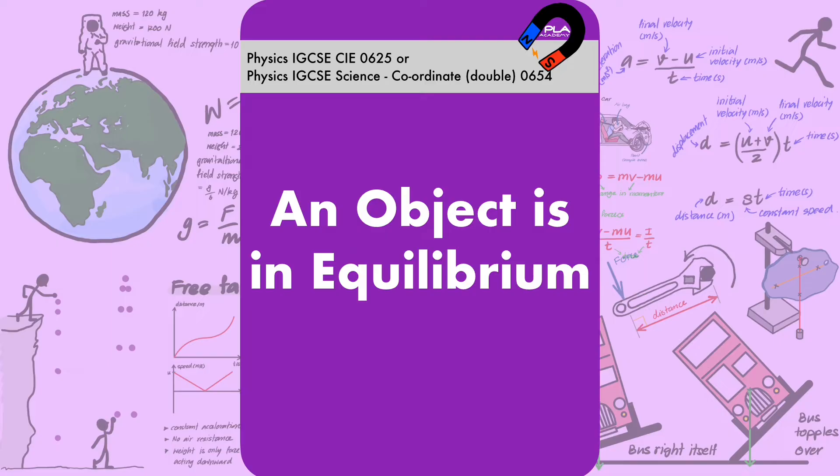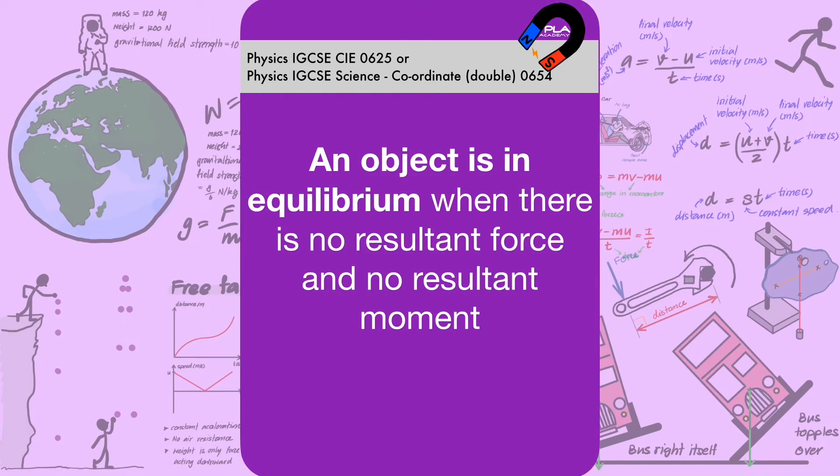An object is in equilibrium. An object is in equilibrium when there is no resultant force and no resultant moment.